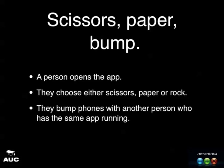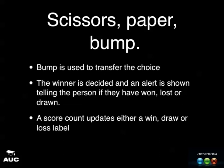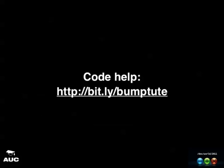The flow of the application: the user opens it, chooses scissors, paper, or rock using a segmented control, bumps phones with another person running the same app, and Bump transfers their choice to the other application. The winner is decided using logic and an alert shows telling the person if they've won, lost, or drawn. The score count then updates the win, draw, or loss label. There's also a tutorial at bit.ly/bumpshoot where you can copy and paste the code as we go.